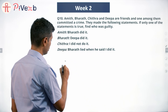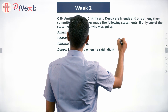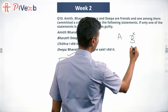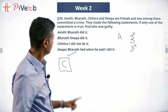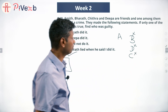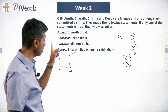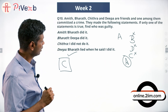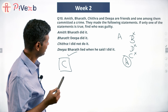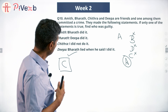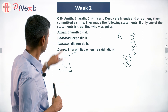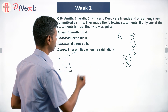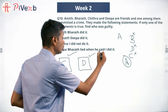Chitra alone speaks the truth. A says Bharat did it — wrong, so Bharat did not commit the crime. B says Deepa did it — also false, so Deepa did not commit the crime. C says 'I did not do it' — true, so Chitra did not commit the crime. By elimination, A — Amit — committed the crime. Now let's look at D: Deepa says 'Bharat lied when he said I did it.' Since Bharat said Deepa did it and Deepa didn't, Bharat did lie — so D also becomes true.